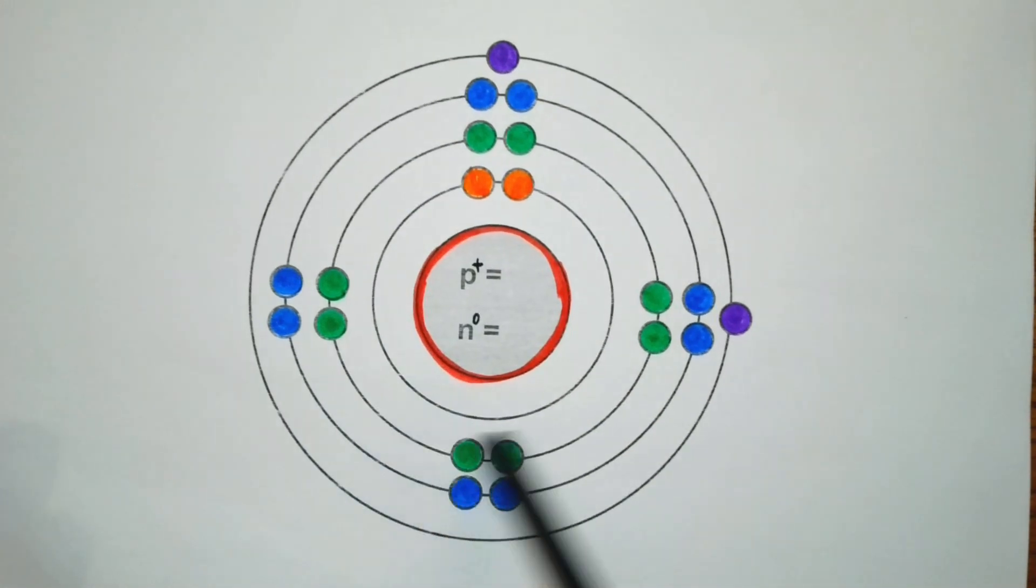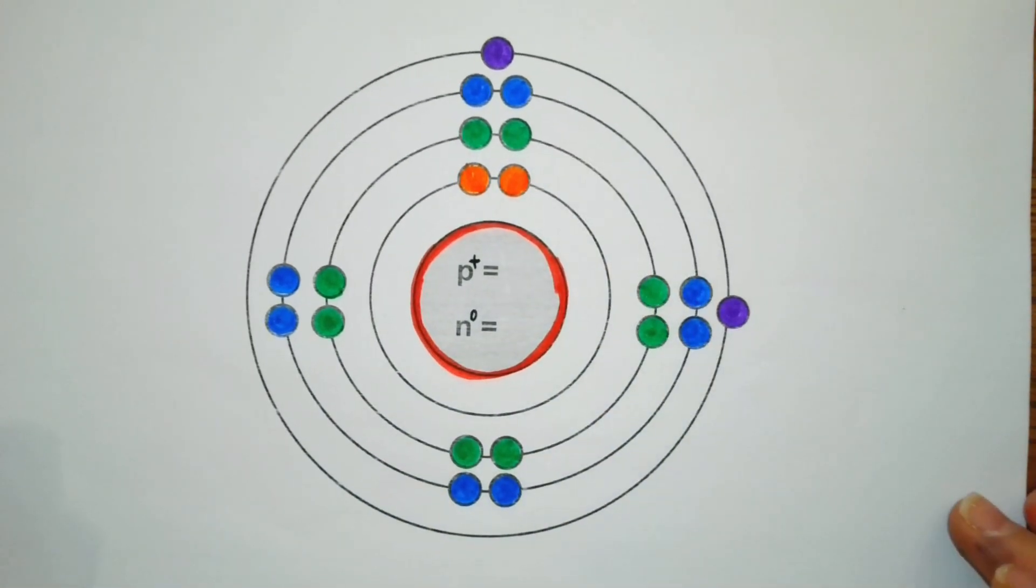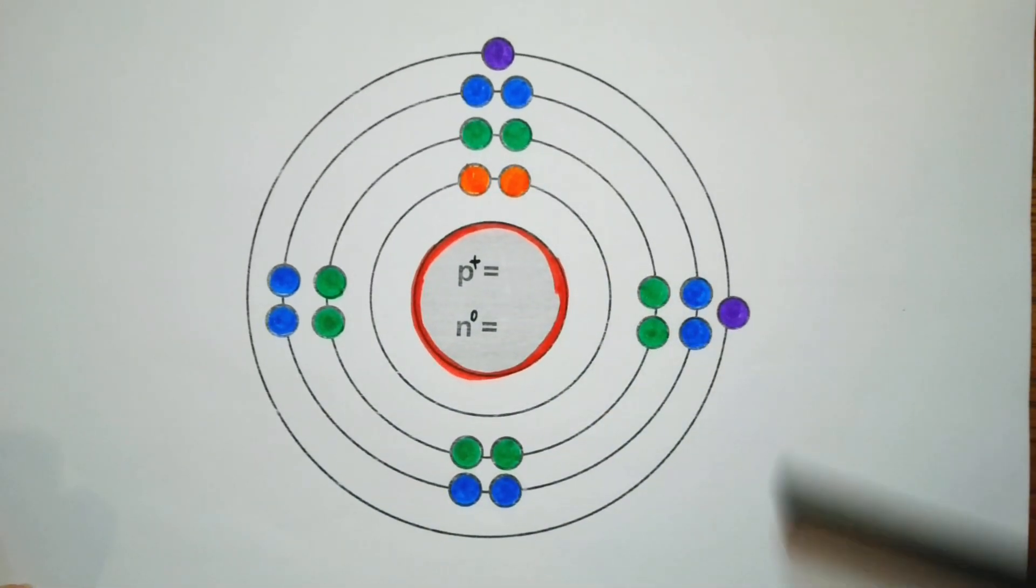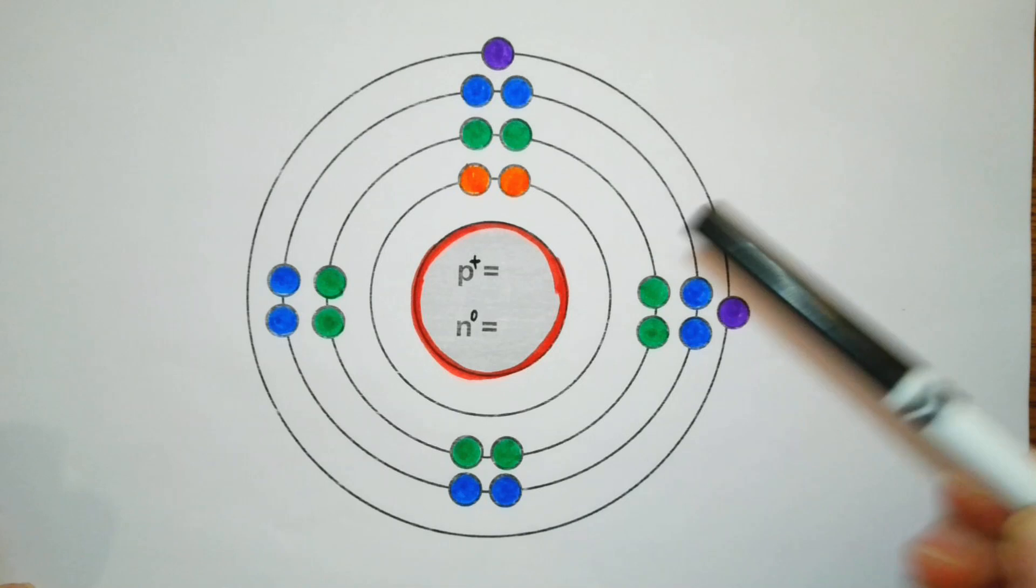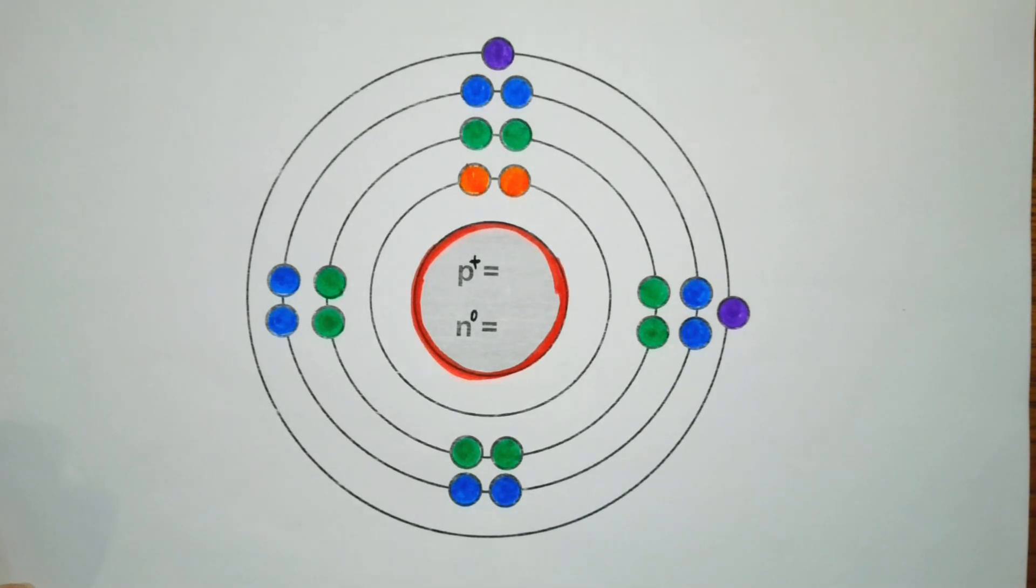In the second electron shell or orbital, it can have a maximum of eight electrons, and these electrons do not pair until we get to the fifth electron. After that they start to pair.